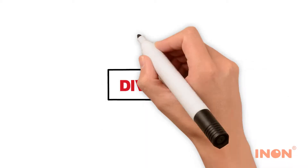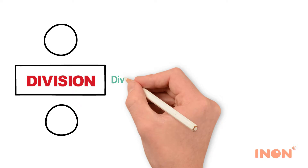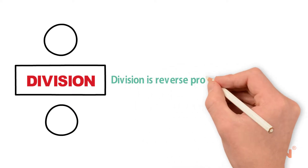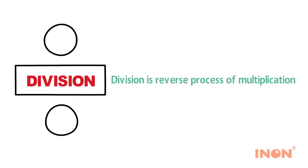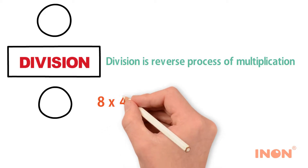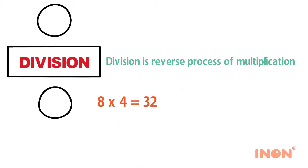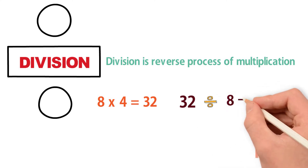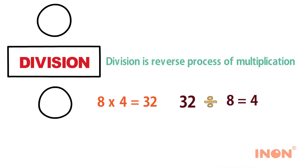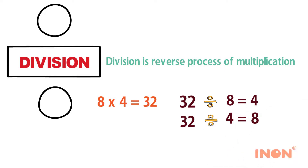Lesson: Division. Division is the reverse process of multiplication. 8 into 4 equals 32. 32 divided by 8 is equal to 4. 32 divided by 4 is equal to 8.